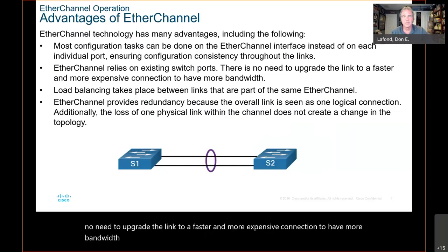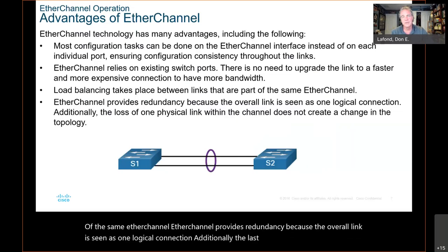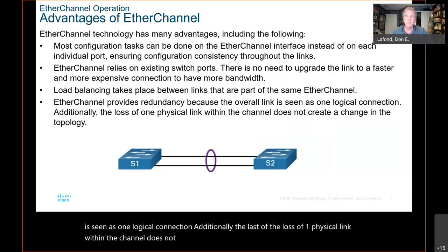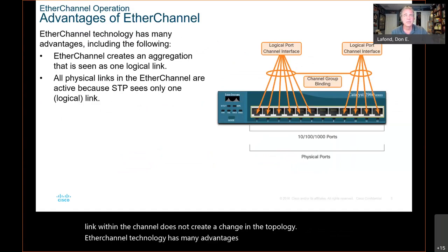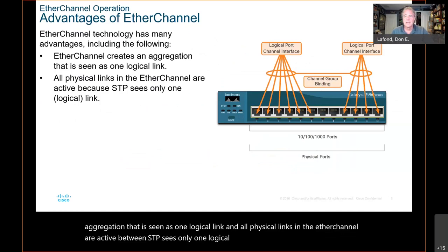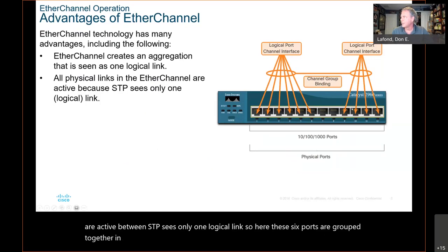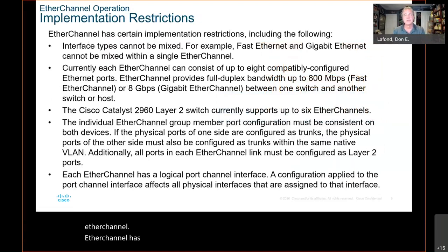Load balancing takes place between the links that are part of the same EtherChannel. EtherChannel provides redundancy because the overall link is seen as one logical connection. Additionally, the loss of one physical link within the channel does not create a change in the topology. EtherChannel creates an aggregation that is seen as one logical link, and all physical links in the EtherChannel are active — STP sees only one logical link. Here, these six ports are grouped together in one EtherChannel, and these four are grouped together in one EtherChannel.